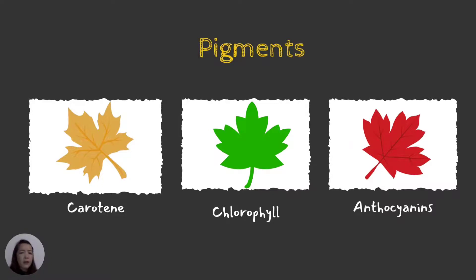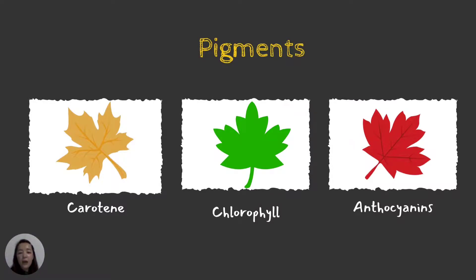Why are the leaves color green? In the light spectrum, the color green is reflected back — that is why it appears green. All the other colors — yellow, red, orange — are absorbed. That is why the color of plants appears green.